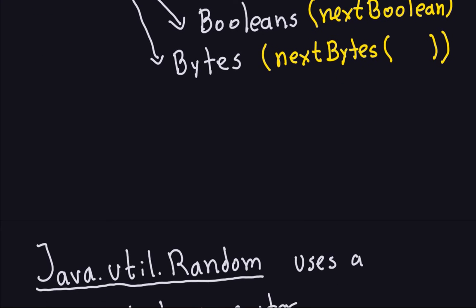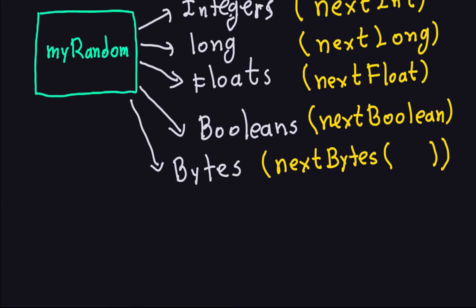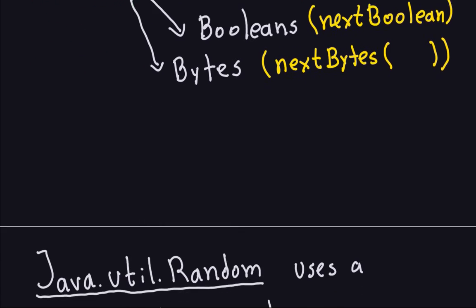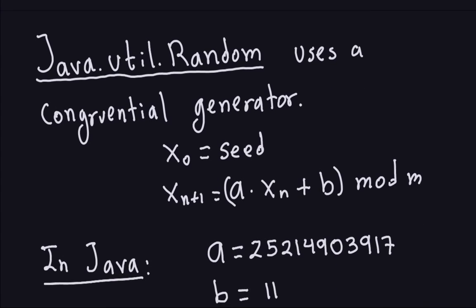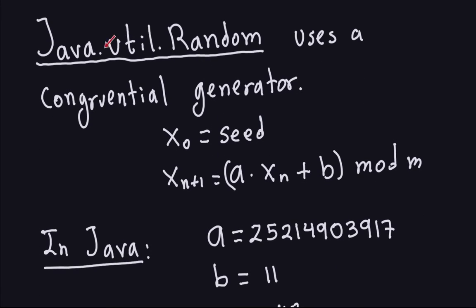How does the random generator actually work? It works with a linear congruential generator, the one we saw earlier. Basically, you start with a seed — just a number — and then you generate the sequence using the formula: take a multiplier times x_n (the previous element in the sequence), plus an increment b, then mod it by some m. That's how you produce the next number in the sequence.